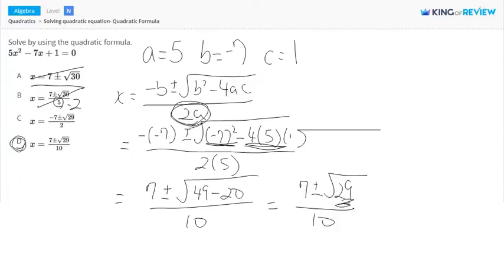Option c actually forgot to multiply the a. That's why it only has a 2. That's why this is wrong. And therefore, the answer to this question is d.